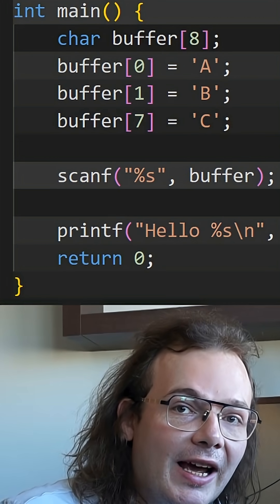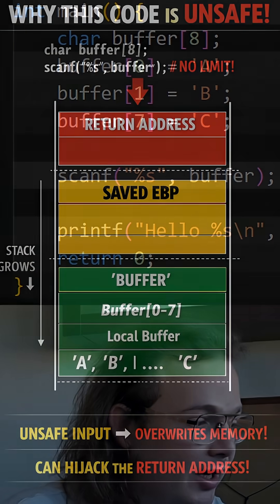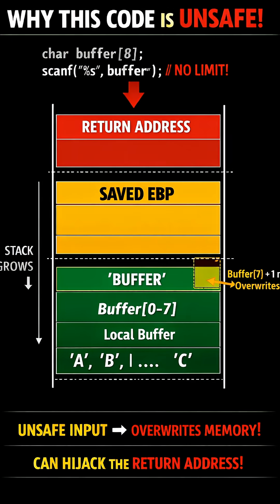Now what's going to happen when we read more than eight bytes into that buffer? It's going to overflow that buffer and override the base pointer that's on the stack and then override the return address. It's essentially going to allow a malicious actor to redirect the function we return to when we return from main.